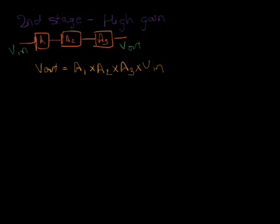This kind of configuration is called a cascade configuration. When you connect the output of one stage to the input of the other. When we see this, we know that from this stage, we want high input impedance.